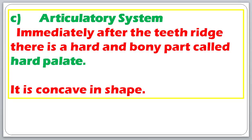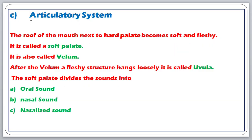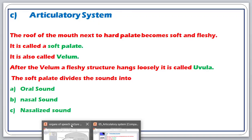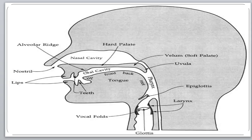The roof of the mouth next to the hard palate becomes soft and fleshy, and we call it the soft palate. It is also called the velum. Next to the alveolar ridge is the hard palate, and next to the hard palate is this soft fleshy structure called the soft palate or velum.